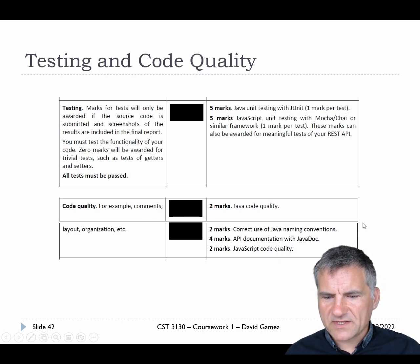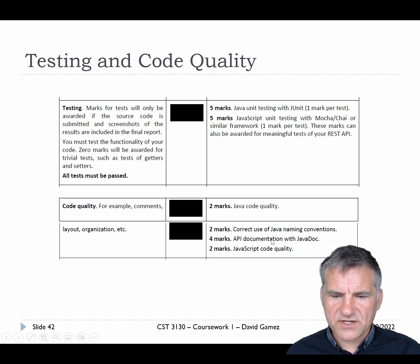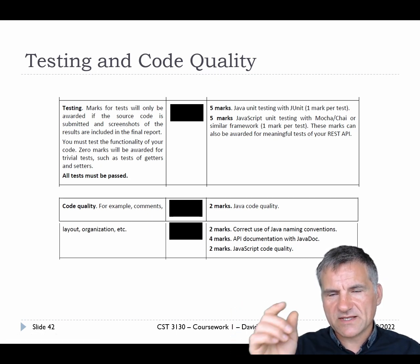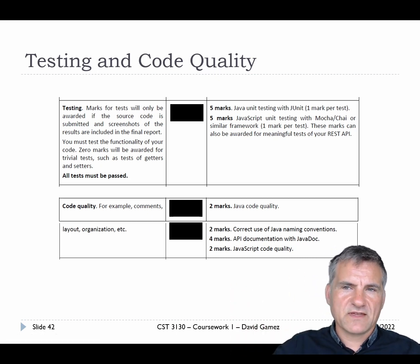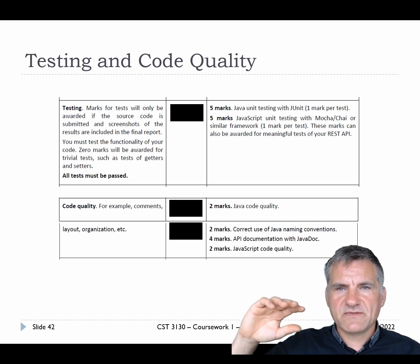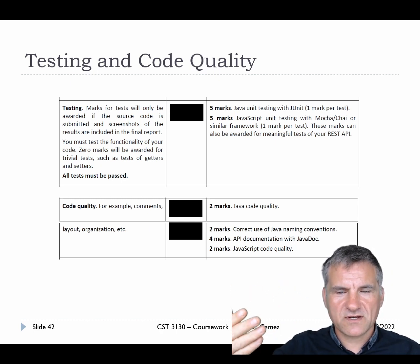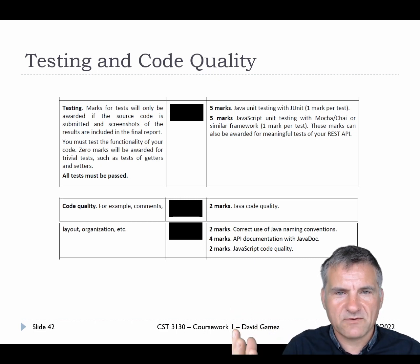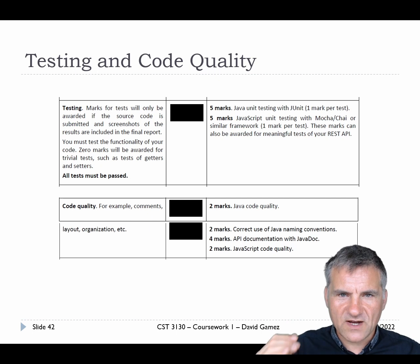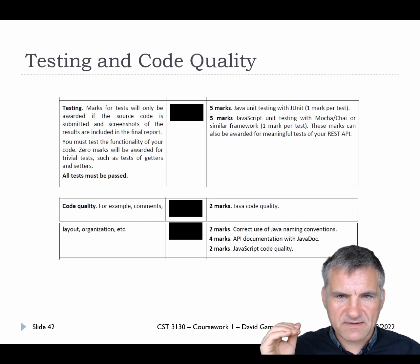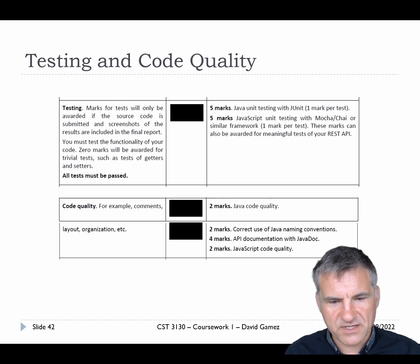For Java code quality: Java naming conventions, API documentation with Javadoc. That means putting appropriate Javadoc comments - it's the slash star star format, finishing with a star slash. If you don't put the right comments in your code, you can't generate Javadoc properly. So you must put the right comments in the code, then generate the Javadoc, and submit the Javadoc with the rest of your submission.